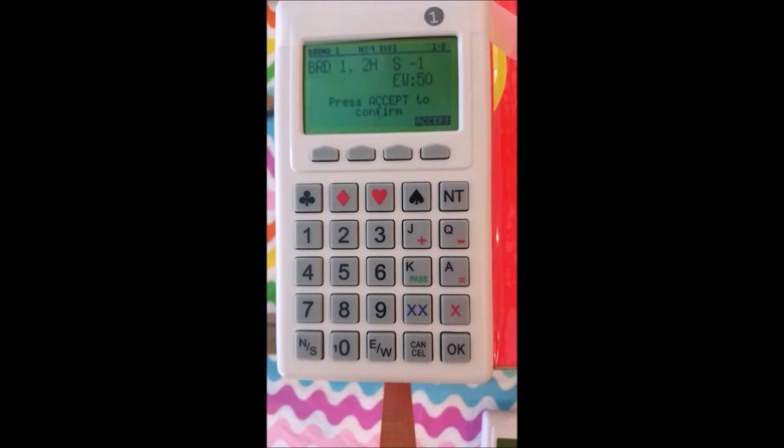All right. So it tells me that East-West made 50 points. And it wants East-West to accept the score. If North has put it in right, East-West has the option to look at it and make sure it's right. Now the accept button is up on the top. It's right here. Not the OK button, but the accept button is here. So East-West will look at it and they'll hit accept. And it says entry complete.